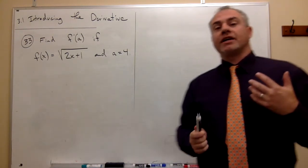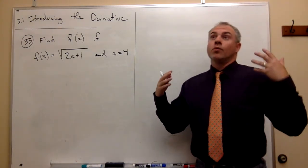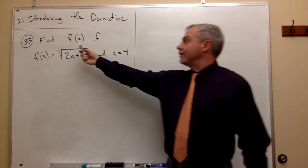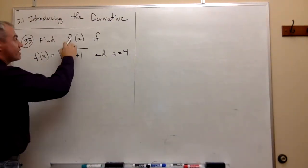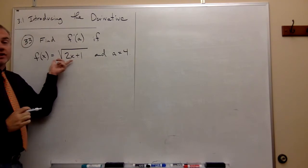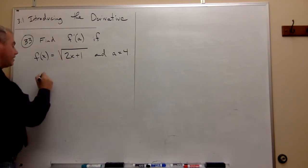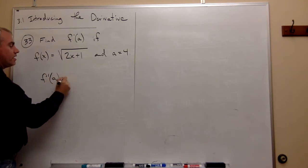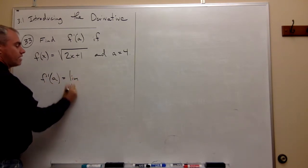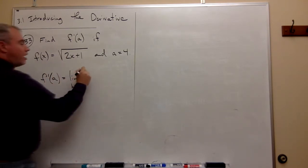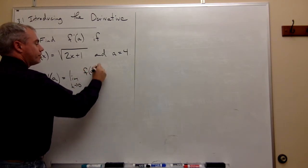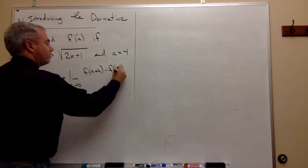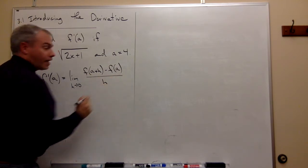By now, we're probably getting the idea that we know what we mean by the derivative of f at a. In other words, what's the slope of this function at a and how we find it is f prime of a is equal to the limit as h goes to 0 of f of a plus h minus f of a divided by h.